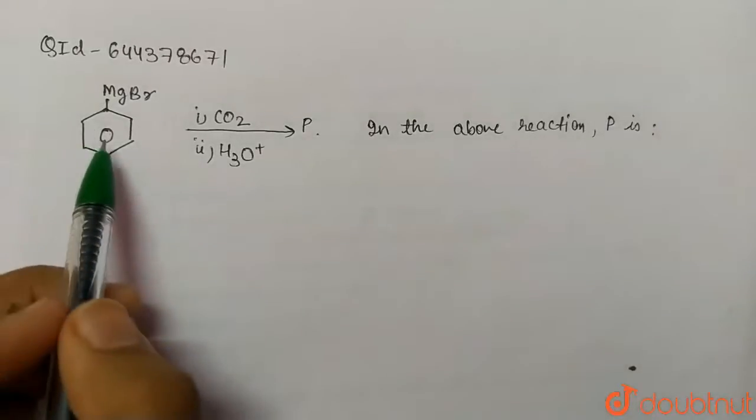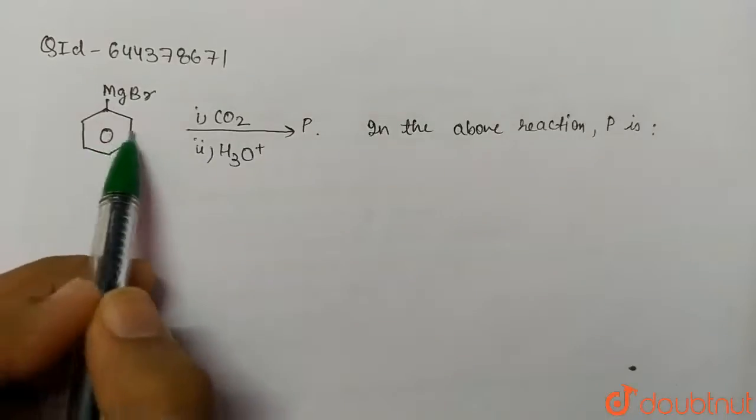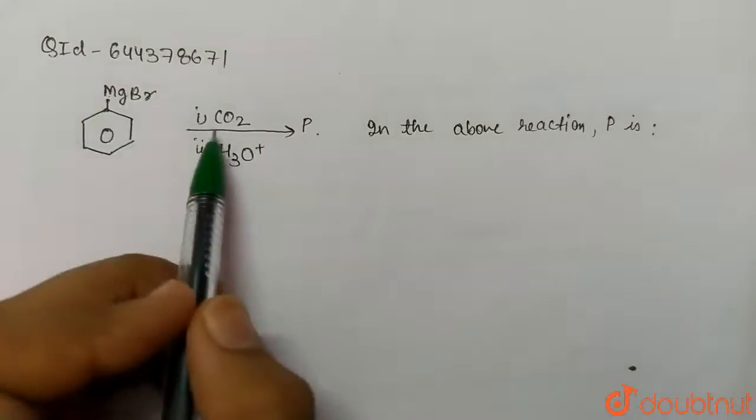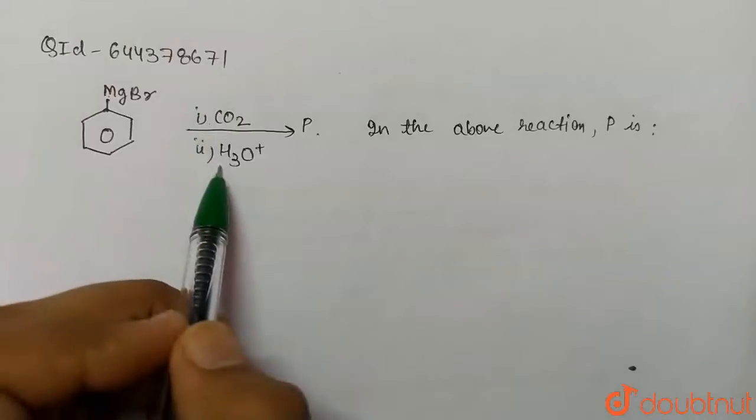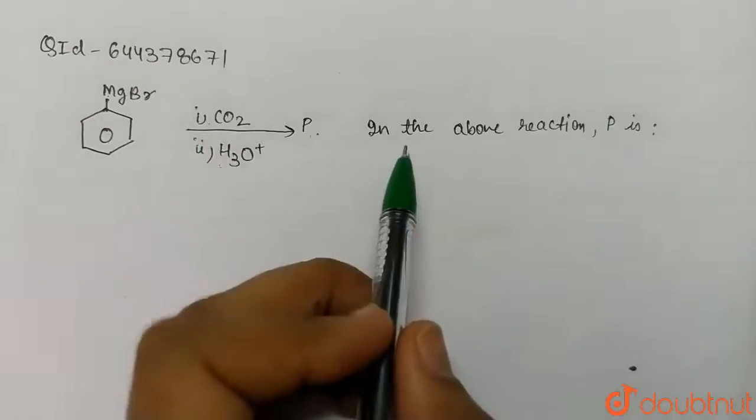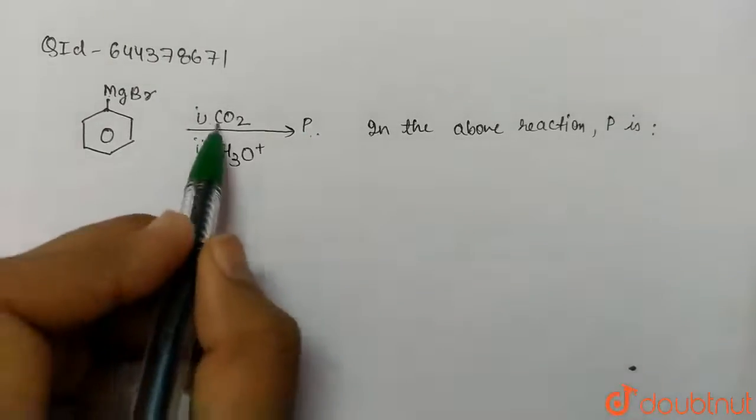We are given a reaction with a C6H5 ring and MgBr. If we react it with CO2 and H3O+, we get product P. So we have to find P here.